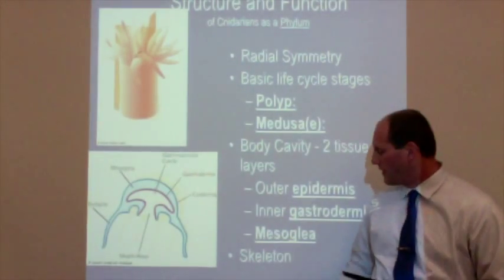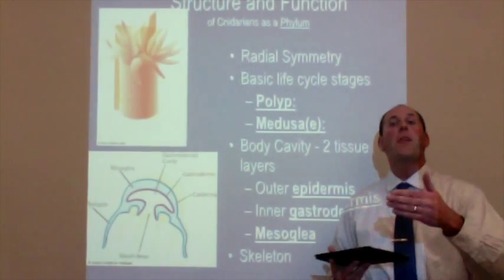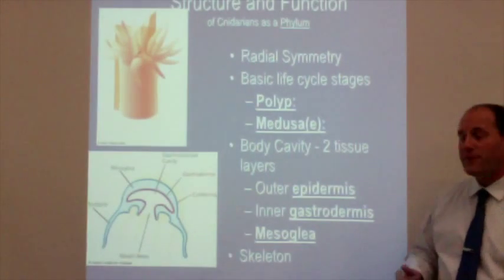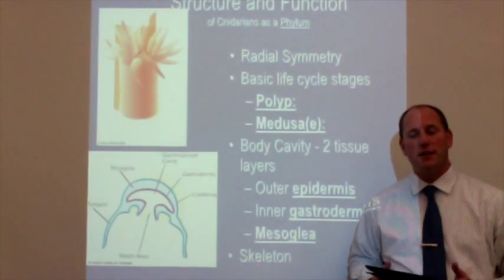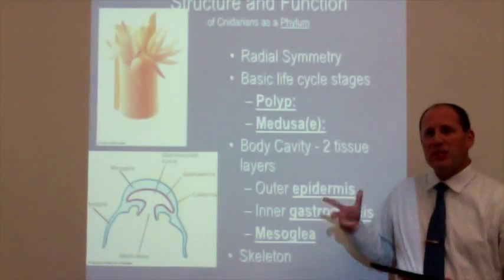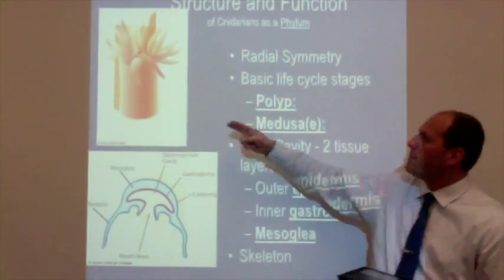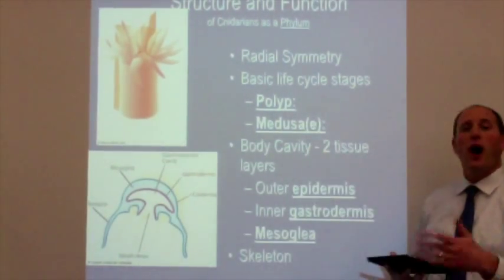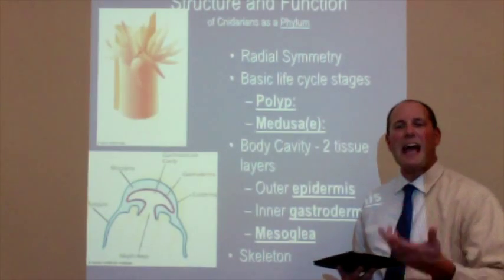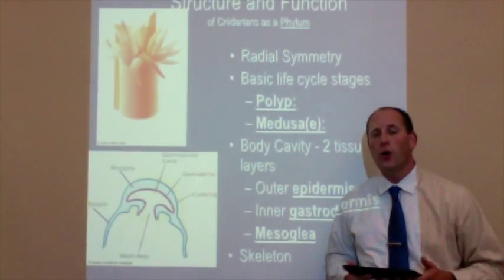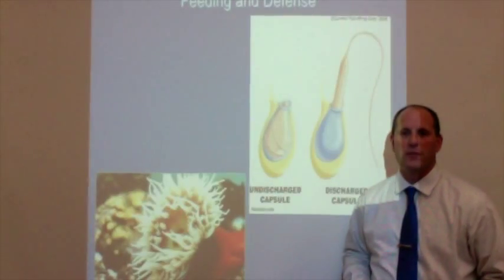The skeleton — the body support system — is very diverse in this group of Cnidarians. Some have a hydrostatic skeleton: they absorb water into their cells and use that water to provide support, swelling up like sea anemones and jellies. Others have a hard skeleton and secrete calcium carbonate, CaCO3 — those are organisms like corals. So there are a couple of different types of body support for these organisms.